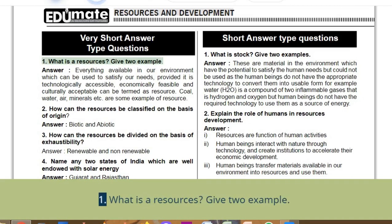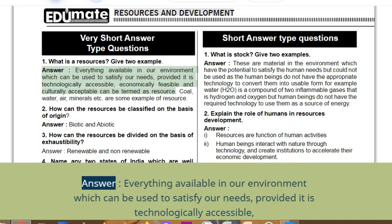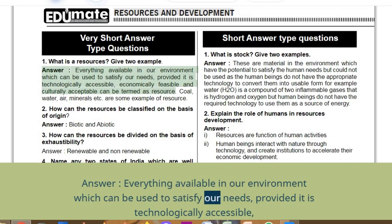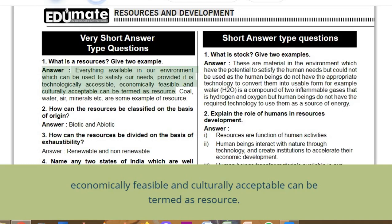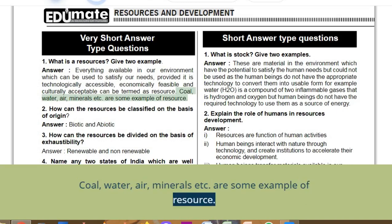Very short answer type questions. Q1: What is a resource? Give two examples. Answer: Everything available in our environment which can be used to satisfy our needs, provided it is technologically accessible, economically feasible, and culturally acceptable, can be termed as a resource. Coal, water, air, and minerals are some examples.